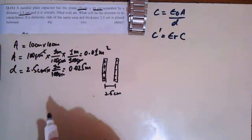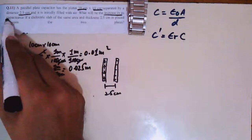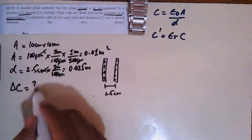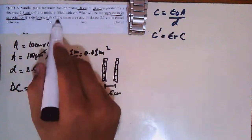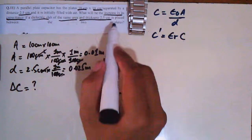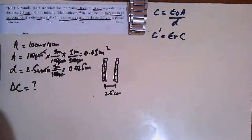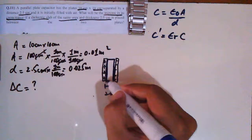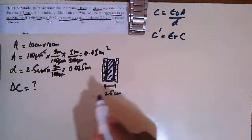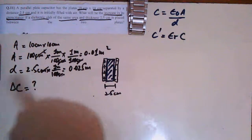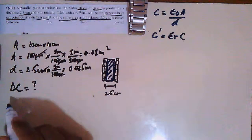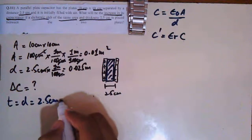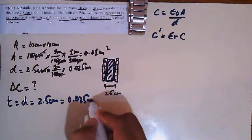Then we are asked: what will be the change in its capacitance — write it carefully — what will be the change in capacitance, which we call ΔC, if a dielectric slab of the same area and thickness 2.5 cm is placed between the two plates? The thickness of the dielectric equals d = 2.5 cm = 0.025 meter.